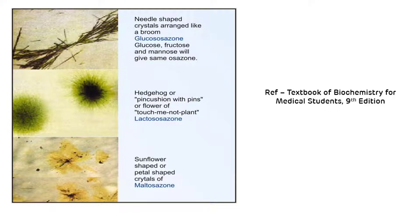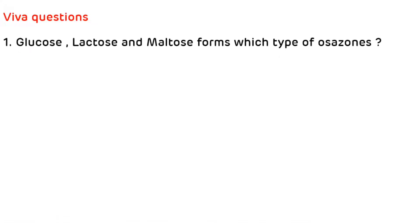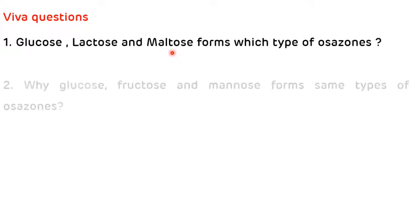Now we will see various viva questions. First question: glucose, lactose, and maltose form which type of osazone? Glucose will form needle-shaped crystals, lactose will form touch-me-not plant-shaped crystals, and maltose will form sunflower-shaped crystals.